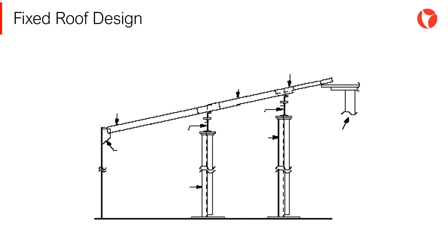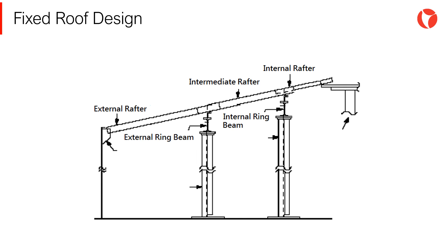Let's take a closer look at these three elements in a large diameter tank. In this case, there are three rows of rafters: external, intermediate, and internal. These rafters will be supported by two ring beams, one external and one internal. In turn, two rows of columns and the central column are needed to support the ring beams.